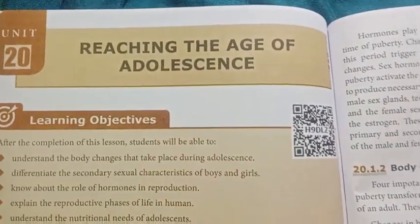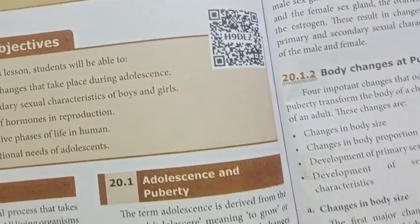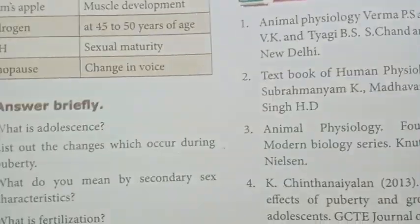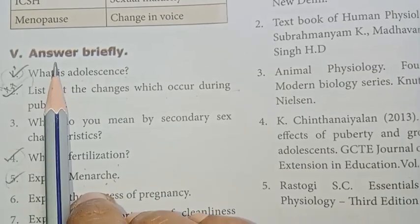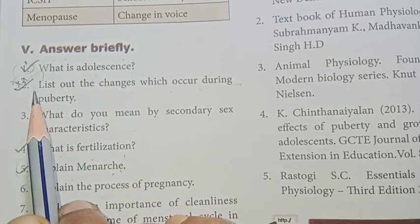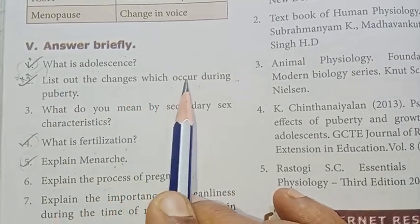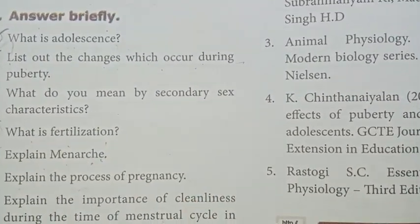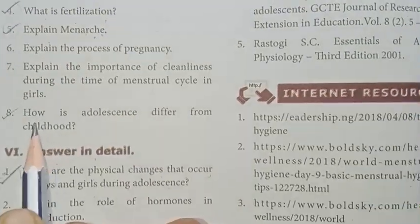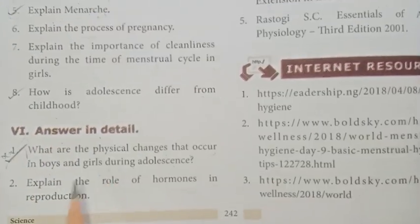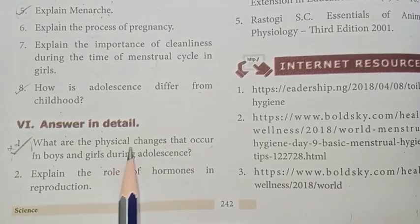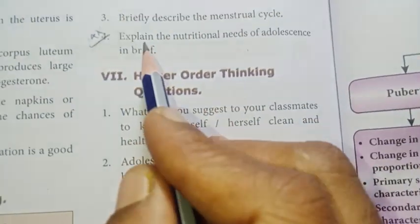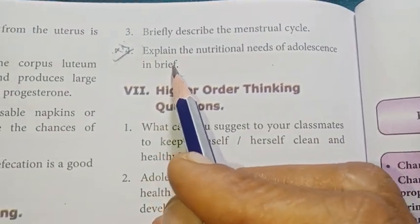Unit 20: Reaching the Age of Adolescence. As usual, 1 marks full. Answer briefly: What is adolescence? Important. List out the changes which occur during puberty — three districts. What is fertilization? Important. Explain menarche. How does adolescence differ from childhood? Important. In detail, first one: What are the physical changes that occur in boys and girls during adolescence? And fourth one: Explain the nutritional needs of adolescence in brief — fourth one important.